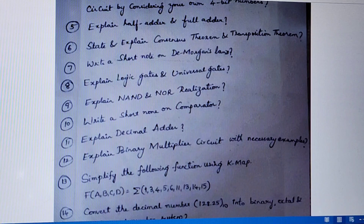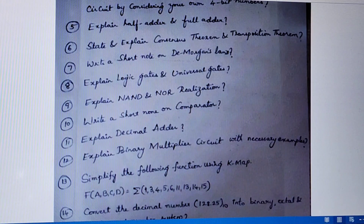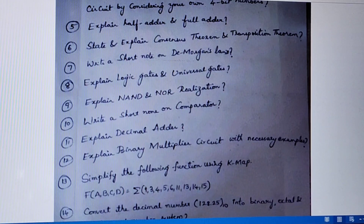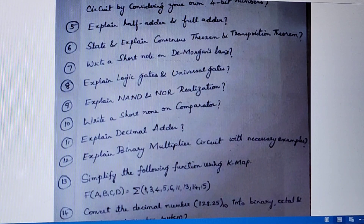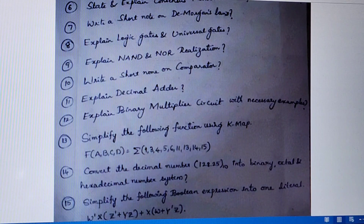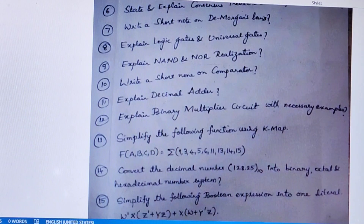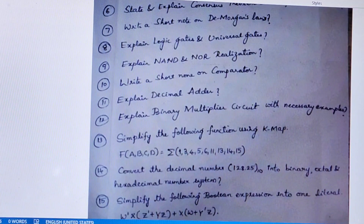For the binary multiplier, you have to consider 2-bit, 3-bit, or 4-bit numbers in A and B, perform the multiplication operation, and based on that operation draw the logic circuit. Thirteenth question is simplify the following expression using KMAP: f(a, b, c, d) = Σ(1, 3, 4, 5, 6, 11, 13, 14, 15).